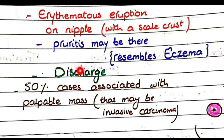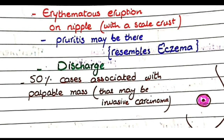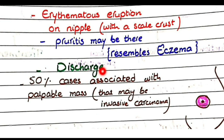Sometimes Paget's disease of nipple presents as nipple discharge. An important point is that 50% of cases of Paget's disease of nipple are associated with a palpable mass, which may indicate invasive carcinoma. Paget's disease does not always represent invasive carcinoma — sometimes it can be simply ductal carcinoma in situ — but in 50% of cases where there is a palpable mass, it may indicate an underlying invasive carcinoma.